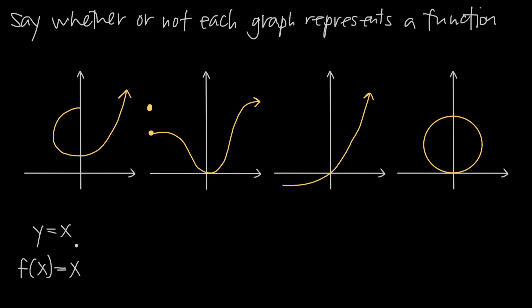In order for an equation to be a function, that has to be true for every single value of x within the domain of the function. For example, if I look at this first graph, let's say I pick this value of x — maybe it's x equals 1, x equals 2, whatever. If I look at the graph, there's only this one single value of y that's returned when I plug in this value of x. So if I plug in x equals 1 into this equation, the value I get back for y is maybe 2. I plug in 1 for x, I get back 2 for y, and there's only one result for y.